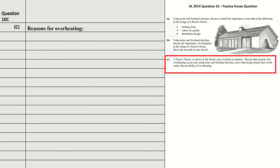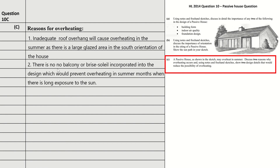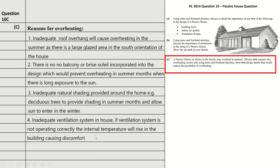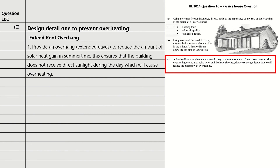Part C: reasons for overheating. A passive house may overheat in summer. Two reasons: first, inadequate roof overhang — there are large glazed areas on the south orientation of the house and there is no balcony or brise soleil in the design, which would prevent overheating in summer when there is long exposure to the sun. Second, inadequate natural shading provided around the home, for example deciduous trees, to provide shading in the summer months. A third reason could be inadequate ventilation system — if the ventilation system is not operating correctly, the internal temperature can rise, causing discomfort.